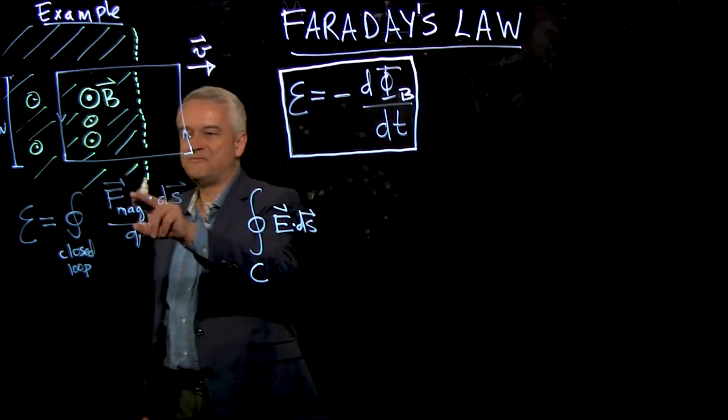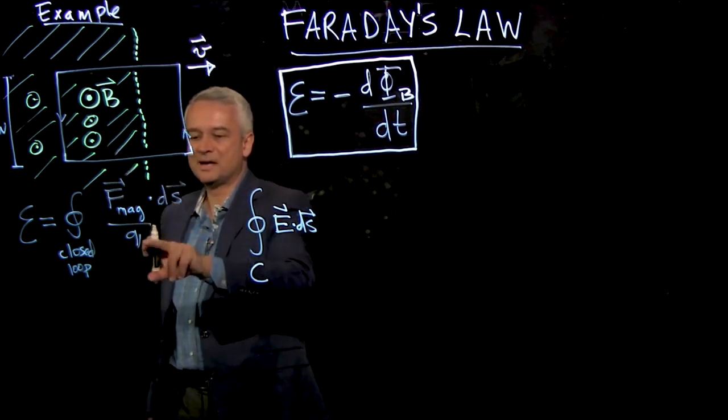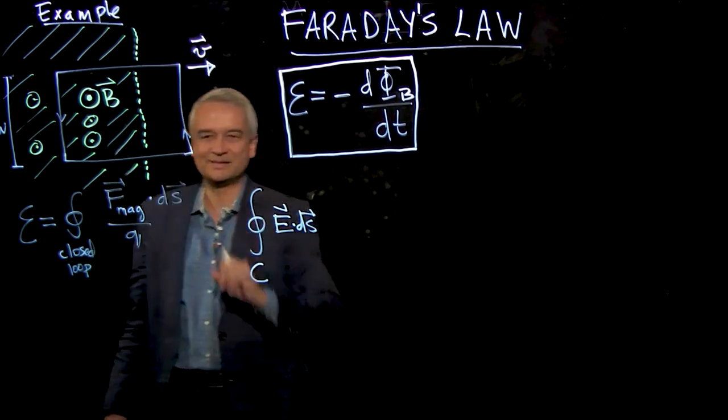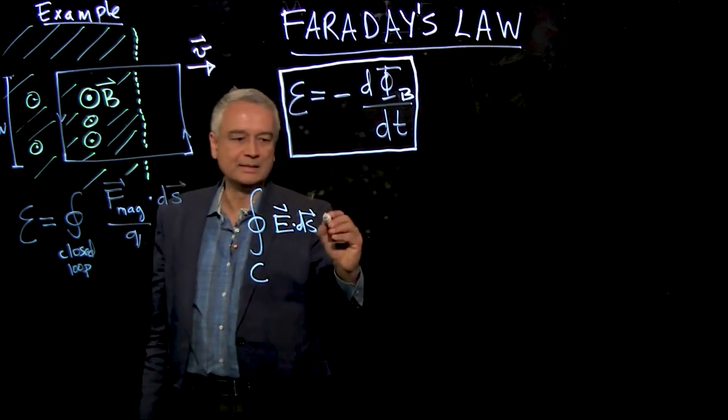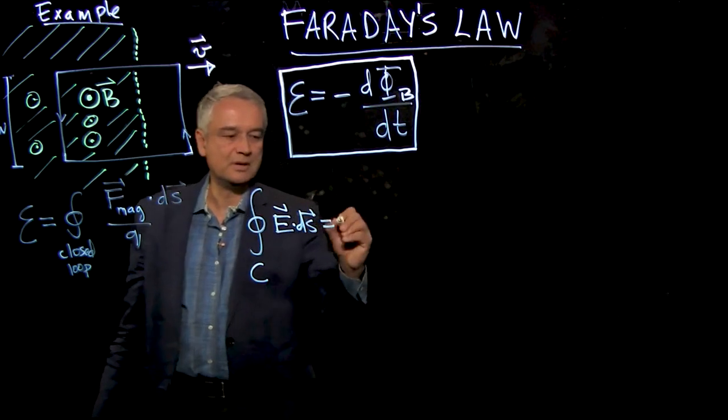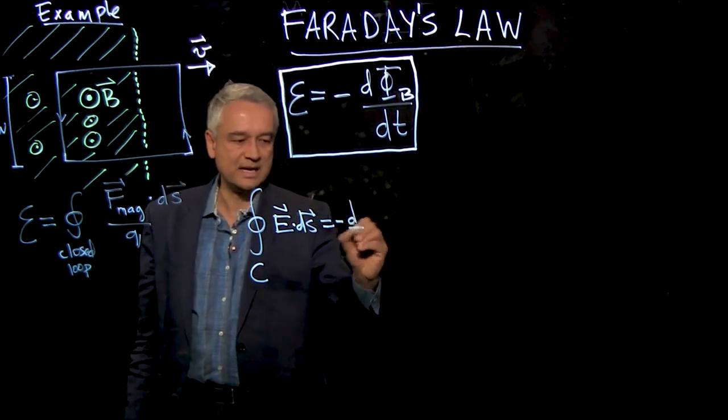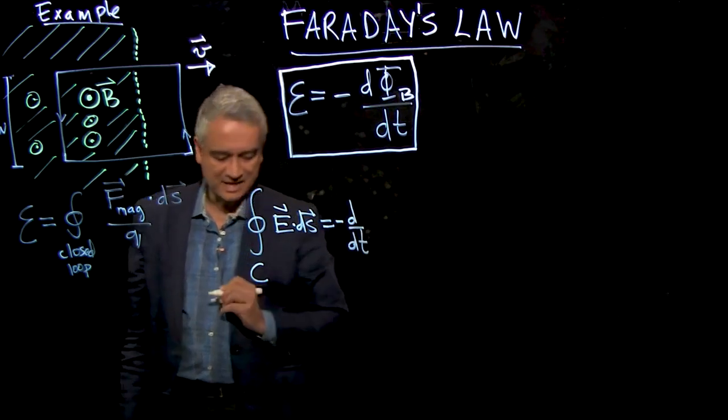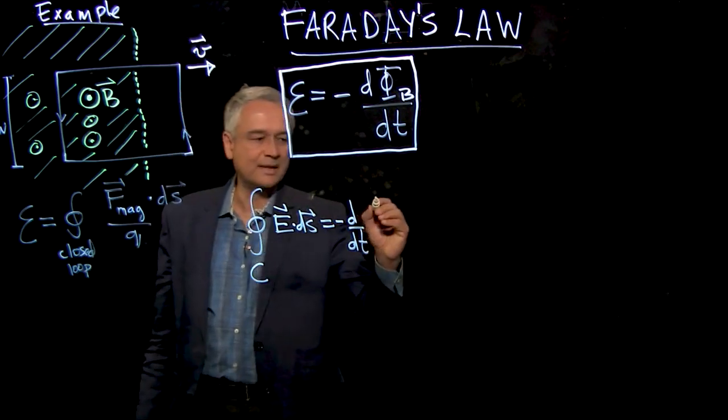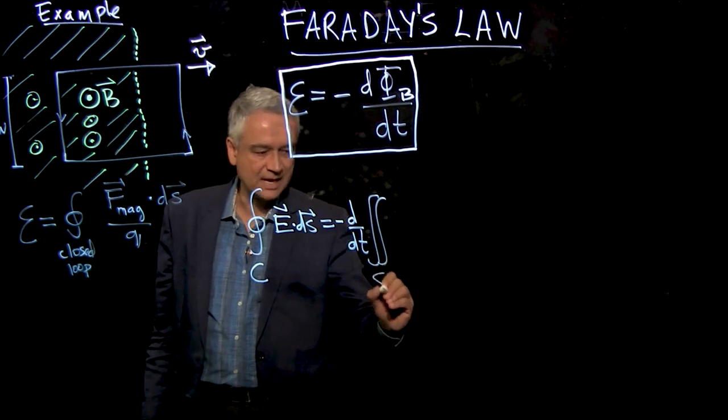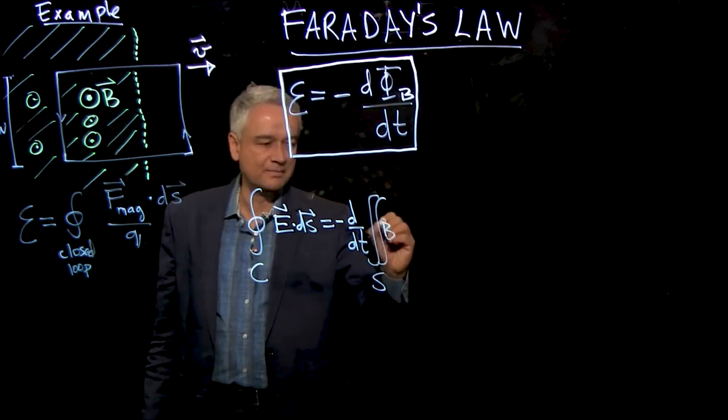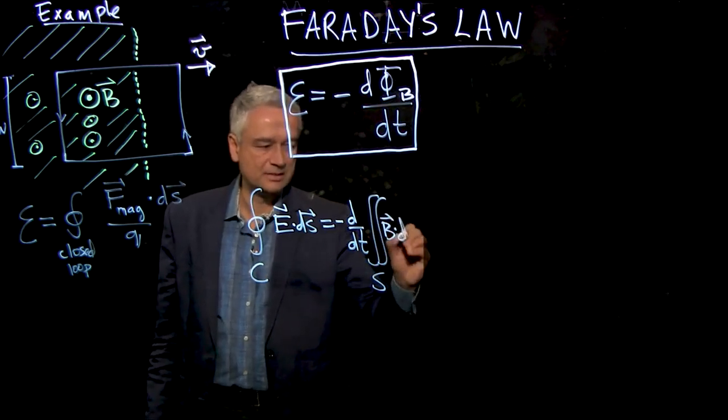because a force pushing a charge divided by Q, that's an electric field. And this is equal to minus d by dt of the magnetic flux through the loop. And the magnetic flux through the loop is a surface integral over some surface S of B dot dA.